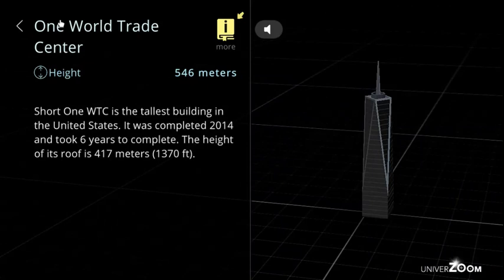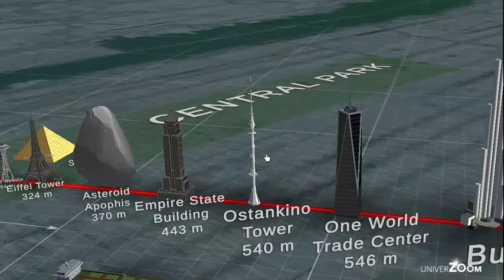One World Trade Center, height: 546 meters. Short 1 WTC is the tallest building in the United States. It was completed 2014 and took six years to complete. The height of its roof is 417 meters, 1,370 feet.